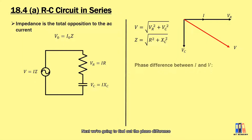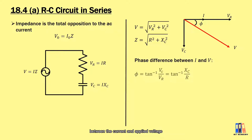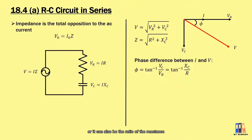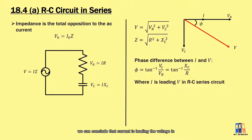Next, we are going to find out the phase difference between the current and the applied voltage V. We apply the formula of trigonometry: the tangent of the angle is equal to the ratio of VC to VR, or it can also be the ratio of the reactance XC to the resistance R. From the phasor diagram, we can conclude that the current is leading the voltage in the RC series circuit.